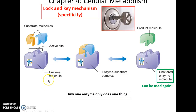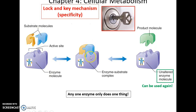Enzymes work in what's called a lock-and-key mechanism — they are very specific and only work on their specific substrates. It's like a key that only works for one kind of lock. The substrate binds to the enzyme's active site, a complex is formed, and then the product is released along with an unaltered enzyme ready to be used again.